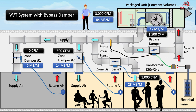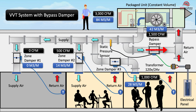Remember that the air conditioner is a constant volume unit and has no way to reduce the air delivered by the unit. This air has to go somewhere, so it is bypassed from the supply air to the return air without entering the space. What happens is that the air becomes cooler or warmer because it hasn't rejected or absorbed heat from the space.